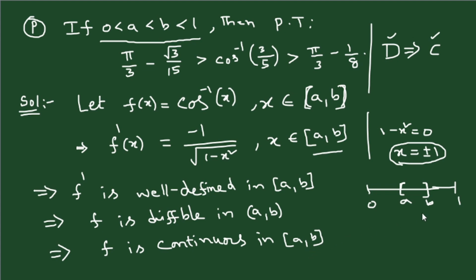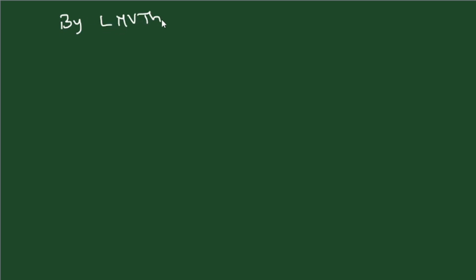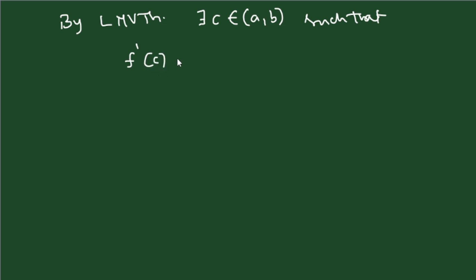Therefore, since the two conditions are satisfied, we can apply Lagrange's mean value theorem to this function. By Lagrange's mean value theorem, there must exist a c in the open interval (a, b) such that f'(c) = [f(b) − f(a)] / [b − a].